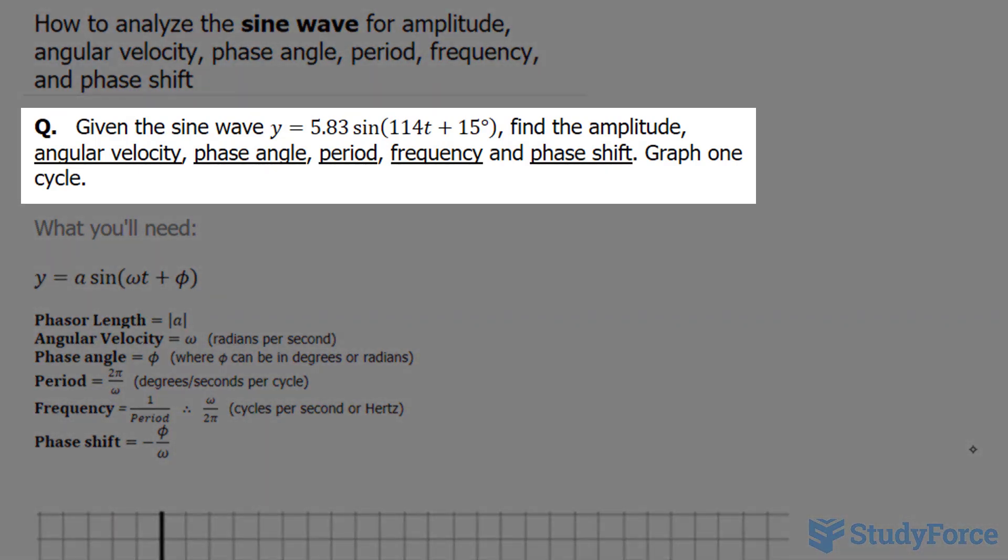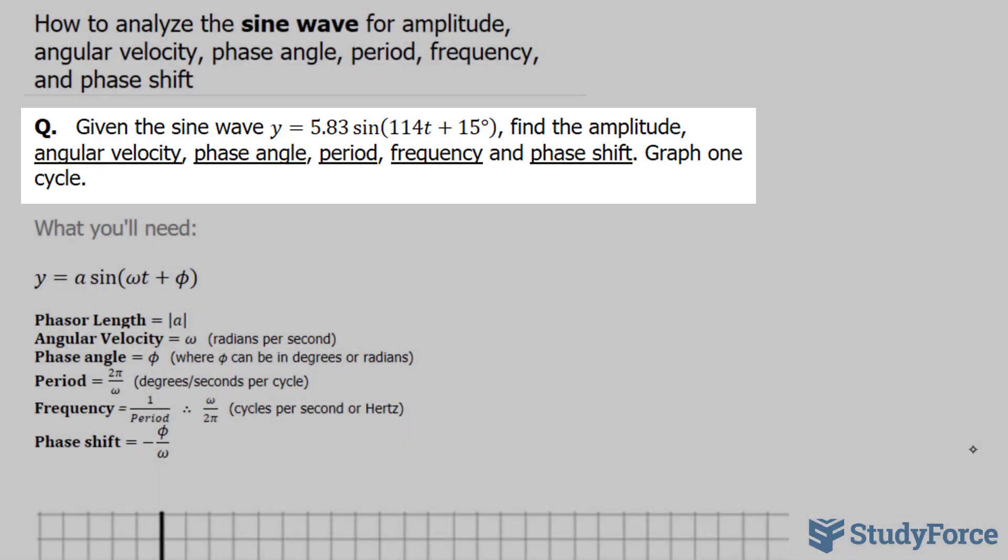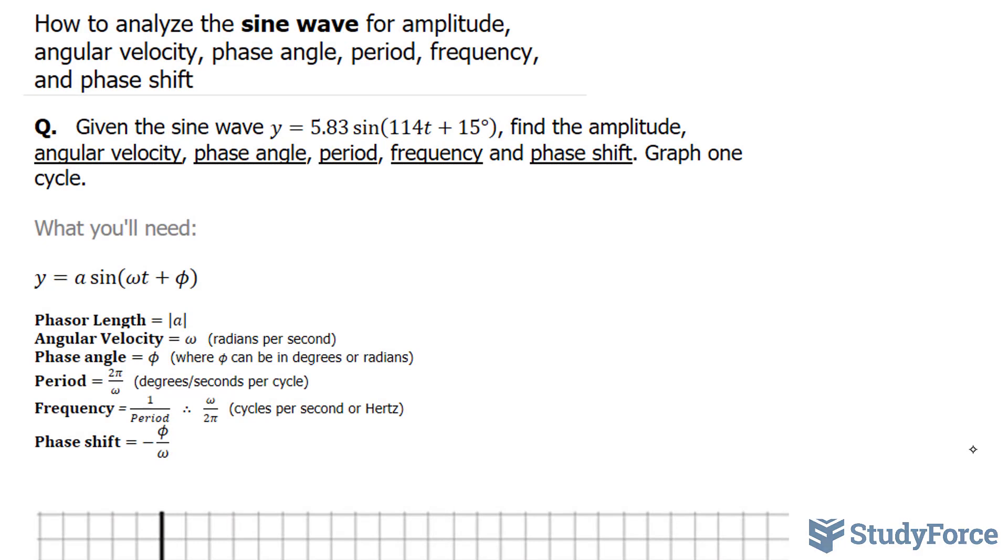The question reads: given the sine wave y equals 5.83 sine bracket 114t plus 15 degrees, find the following properties. What you'll need to answer this question is to know how to point out each of these features.